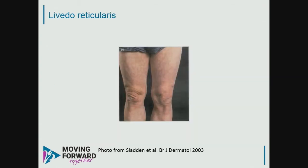This is what's called livedo reticularis — a kind of lattice-like, mottled discoloration. Typically up to the knee, sometimes above; I've seen it in the arms as well. It can be asymmetric. It's not painful. It's a side effect of amantadine.